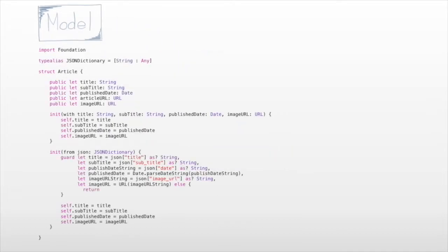We've all been there — we have a brilliant idea and want to make an app. At ABC we wanted to make a news app called the ABC app, to display a lot of different articles for users to read. We need a model to represent this data: a basic Article struct containing a title, subtitle, publish date, a URL to the article, and an image URL, plus a basic initializer and an initializer from a JSON dictionary.